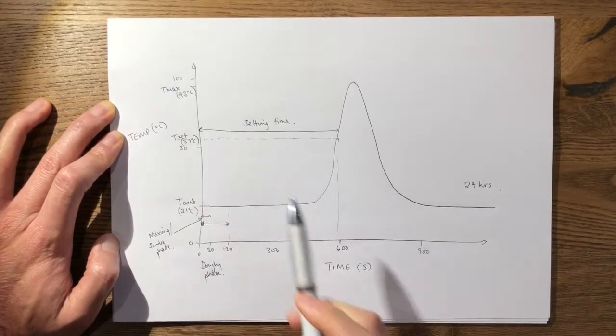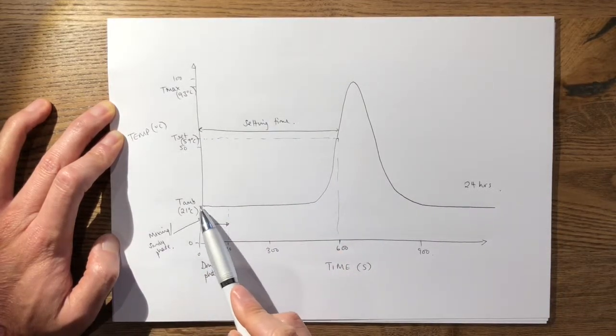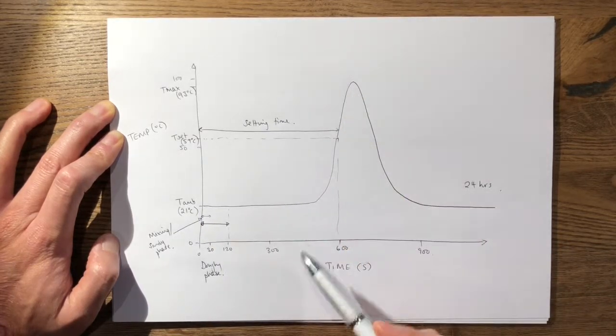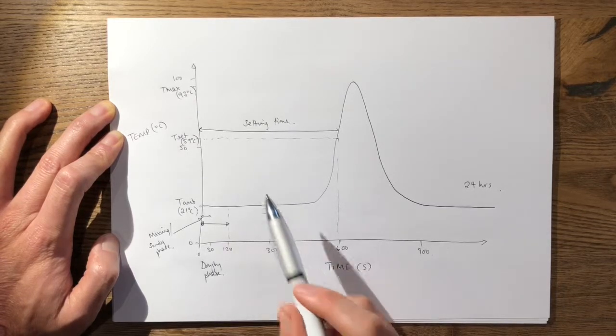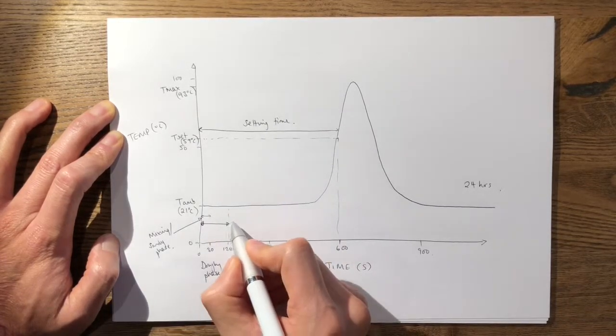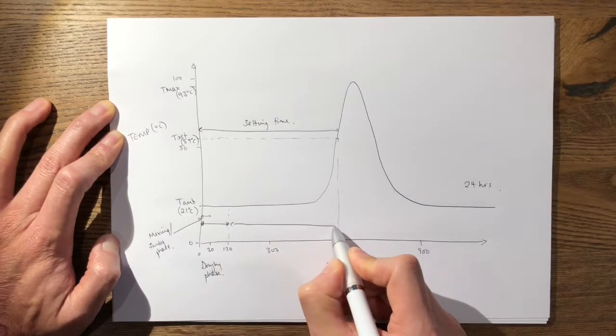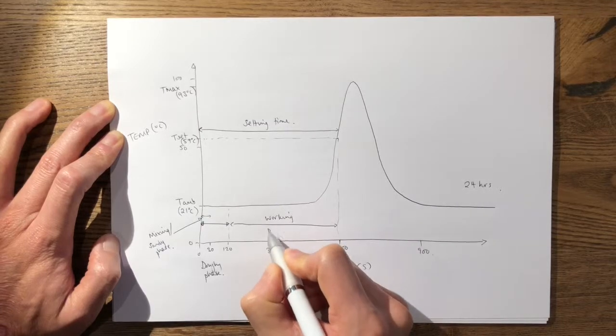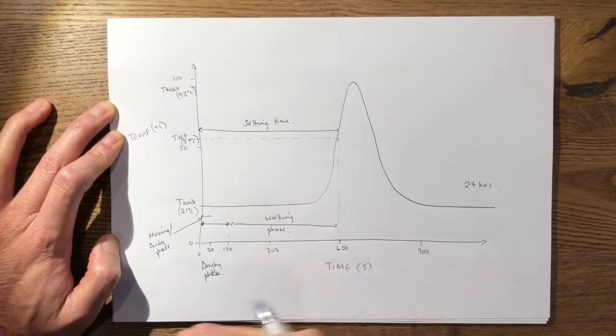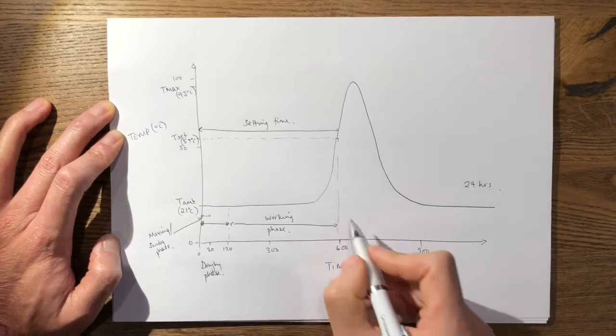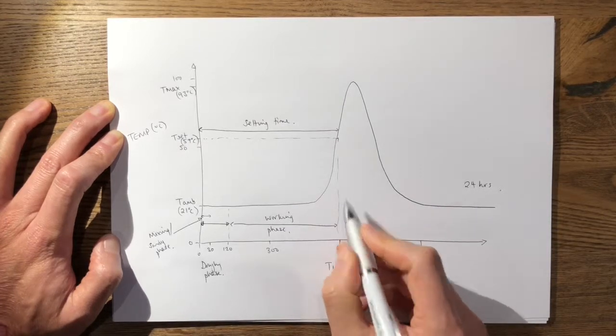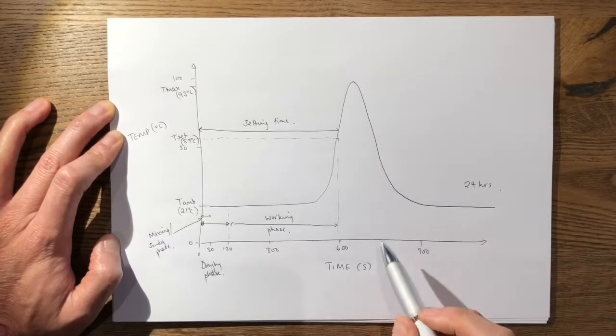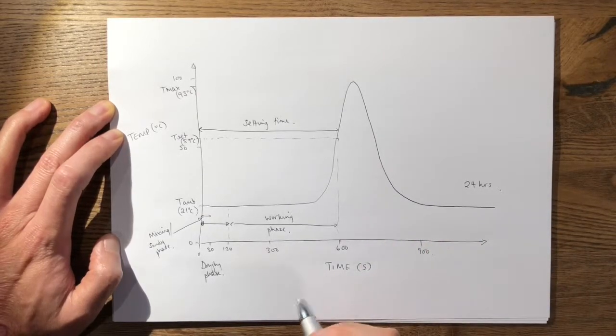We already know the setting time is the time from when it starts mixing all the way to the time it takes for the cement to reach half of its maximal temperature. The difference between the setting time and the doughy phase is termed your working phase. This is the time that allows the surgeon to actually work with the cement. Beyond the setting time, you know that it takes up to 24 hours for the cement to reach its maximal strength.